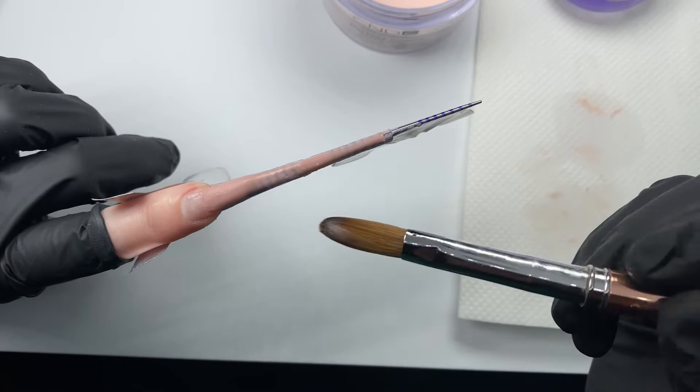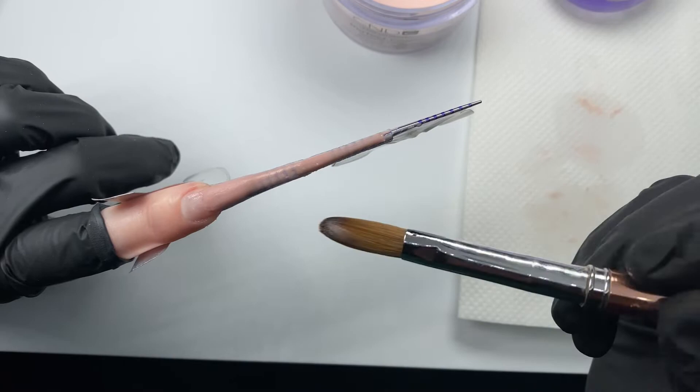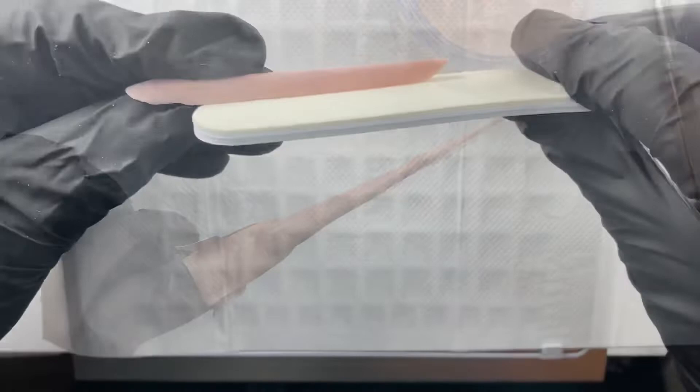Using CND forms and acrylic I sculpted my nails out. It's really important to get that form nice and tight around the free edge and then you won't need to pinch.